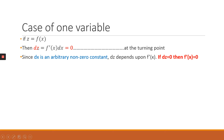For dz to equal zero, either one of these two has to be zero. But we know that dx, your change in x, can never be equal to zero because x is changing. So in that instance, for dz to be equal to zero, the first derivative of x has to be equal to zero. This is basically similar to how we solved for turning points in the previous example, where we took the first derivative, equated it to zero, and solved for x.